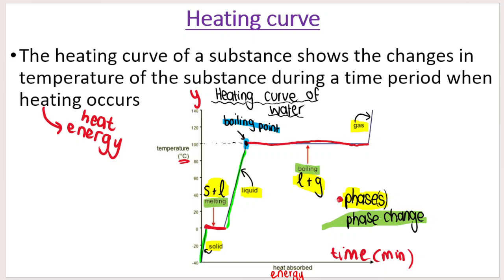The key shows phases in yellow and phase changes in green. The first horizontal of the graph represents melting, and the second represents boiling or evaporation — both terms are applicable. I've also indicated the boiling point, which we know for water is 100 degrees Celsius. The boiling point is where the graph reaches its second horizontal, and the melting point is where it reaches its first horizontal.